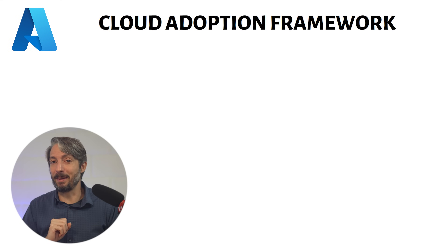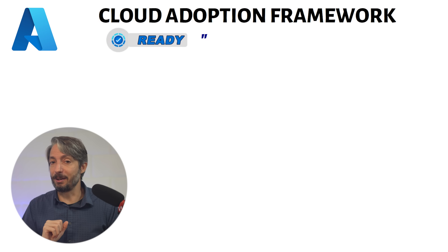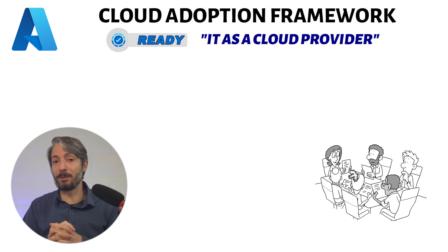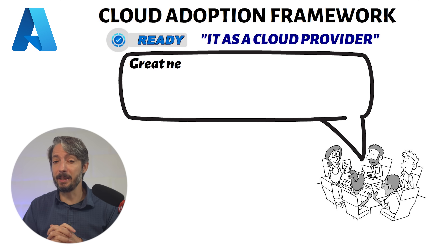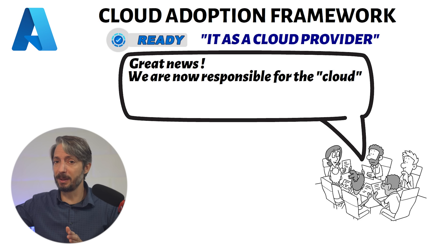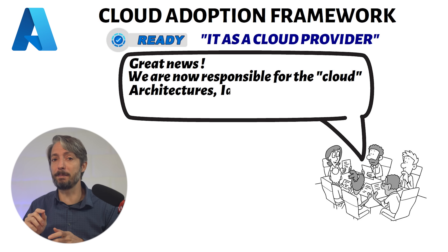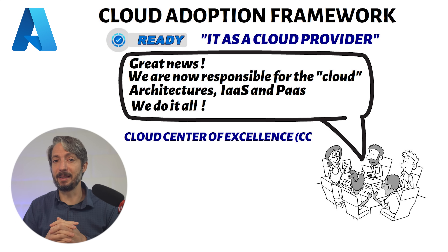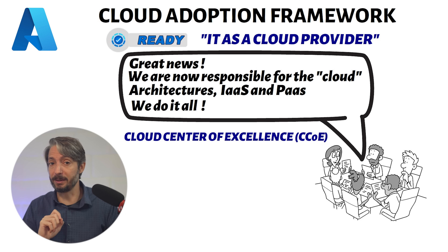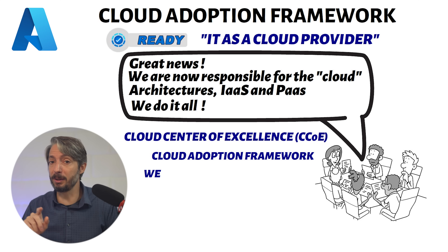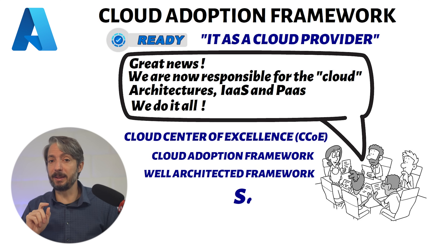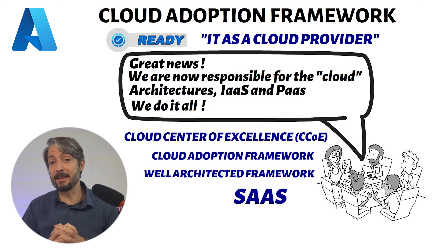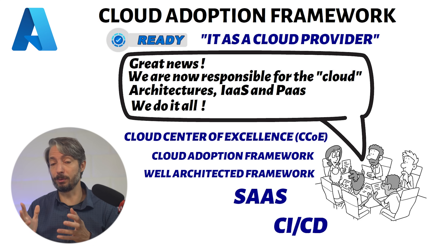The last anti-pattern in the ready pillar is IT as a cloud provider. This occurs when the existing IT department becomes a cloud provider — its scope suddenly increases in responsibility for all reference architecture while providing IaaS and PaaS solutions to the business. This is where the Cloud Center of Excellence (CCoE) comes in to help. To avoid this anti-pattern, follow existing frameworks such as the Cloud Adoption Framework and Well-Architected Framework, push SaaS solutions where possible, and set up a CI/CD pipeline for IT tooling and for the CCoE repositories.